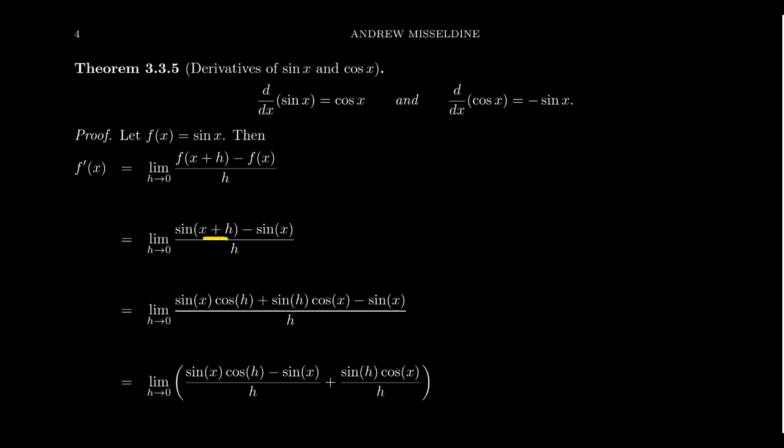Instead, because we have sine and we have this x plus h inside of it, this makes us think about an appropriate trigonometric identity — your trigonometric identity sense is tingling, telling you that there must be some identity that saves the day. Sure enough, we want to use the angle sum identity, which looks like sine of x plus h.